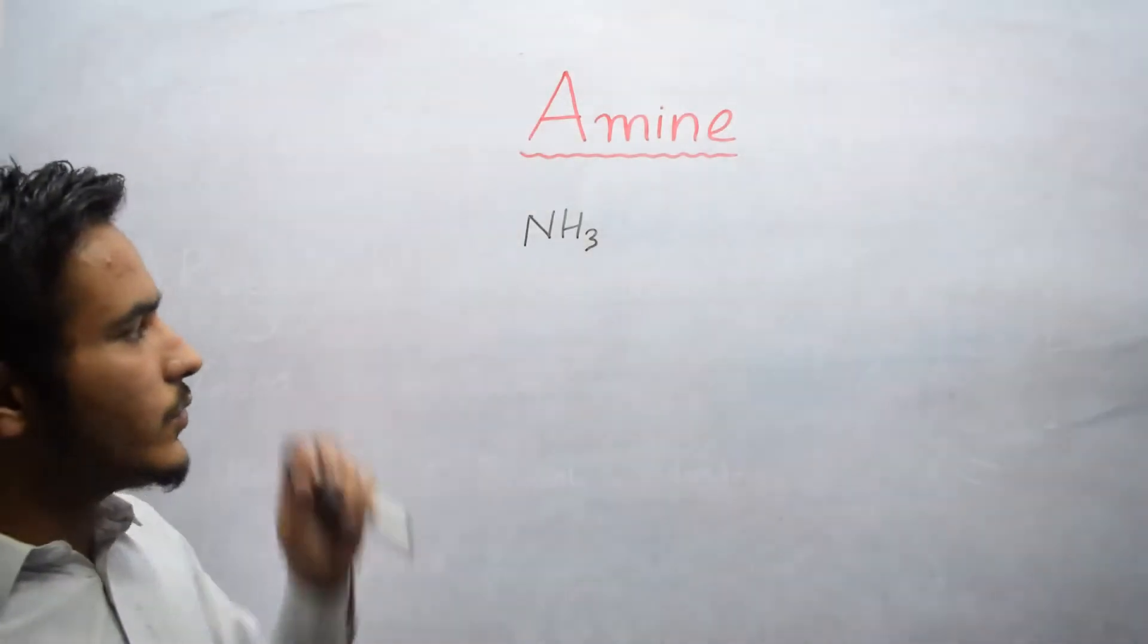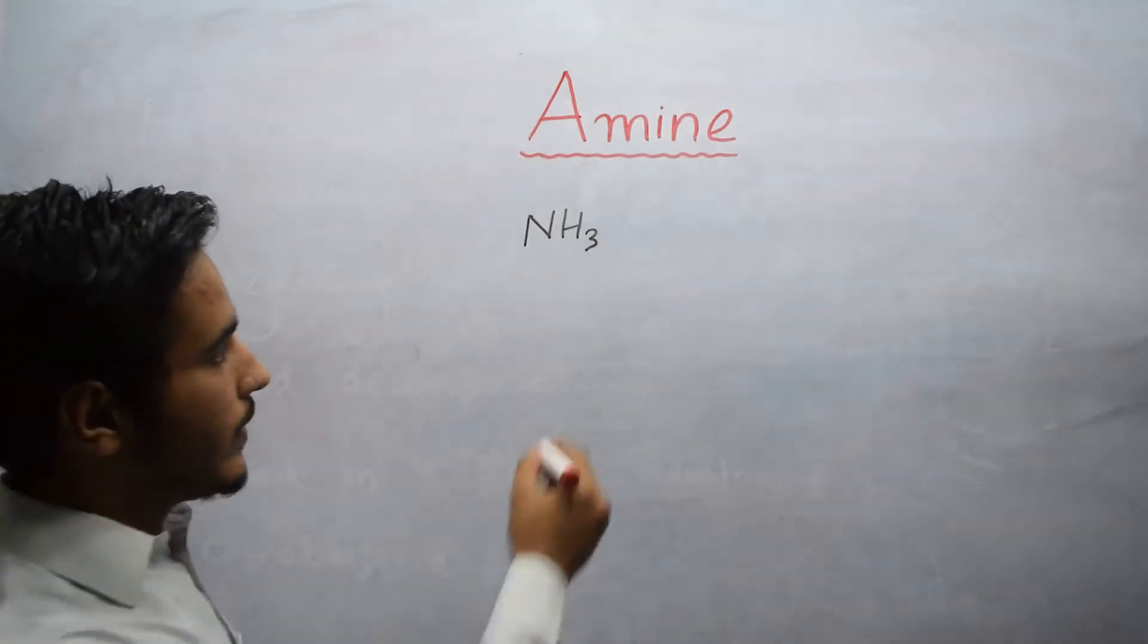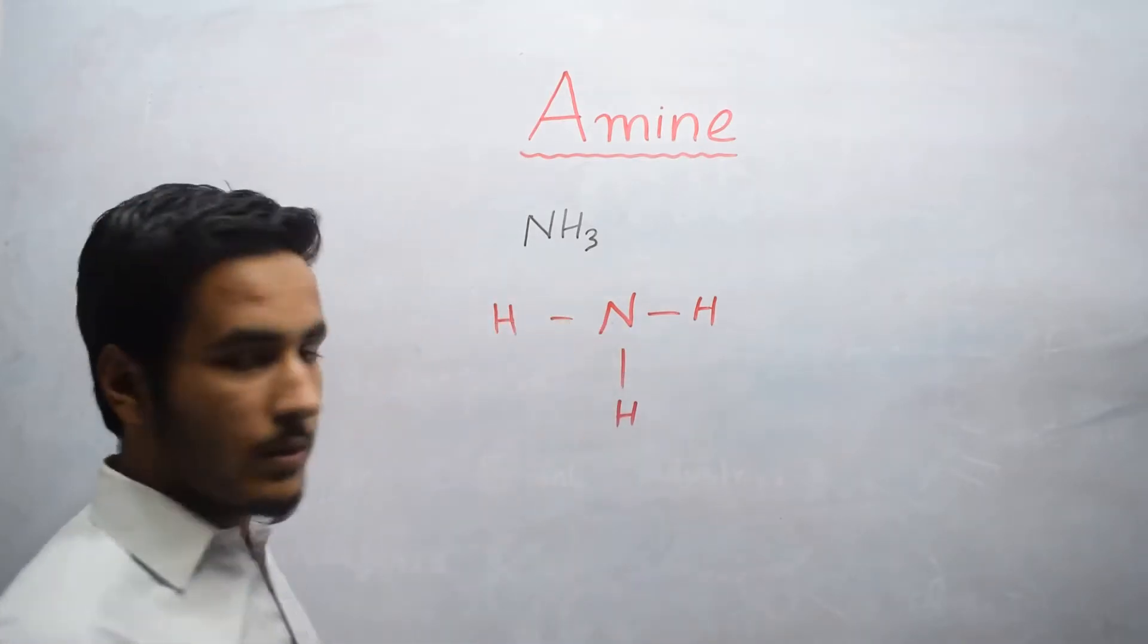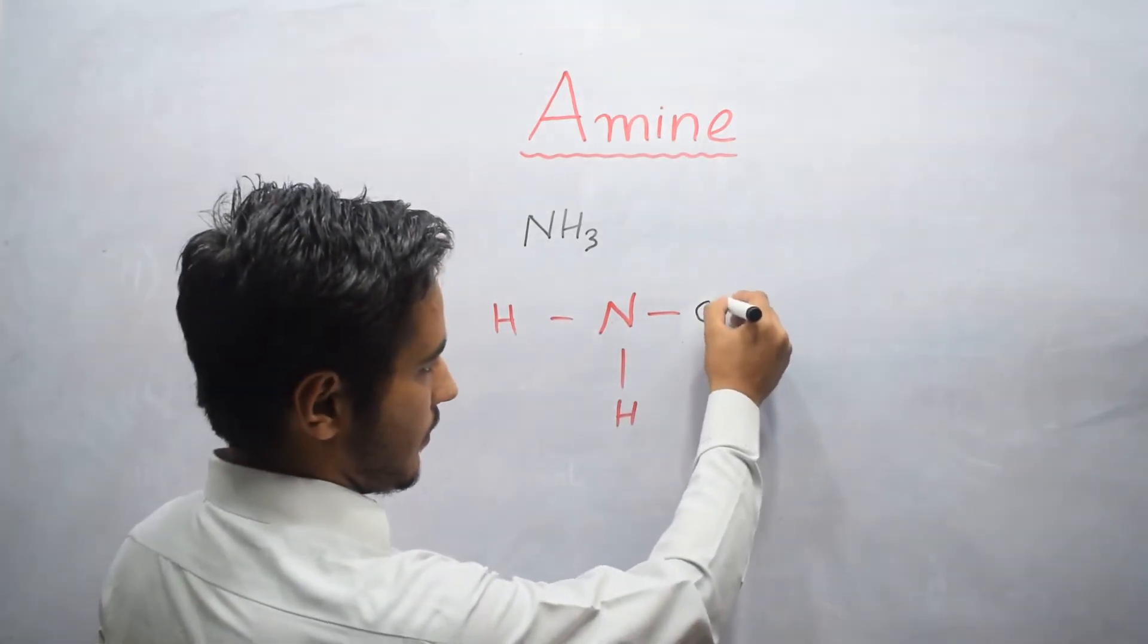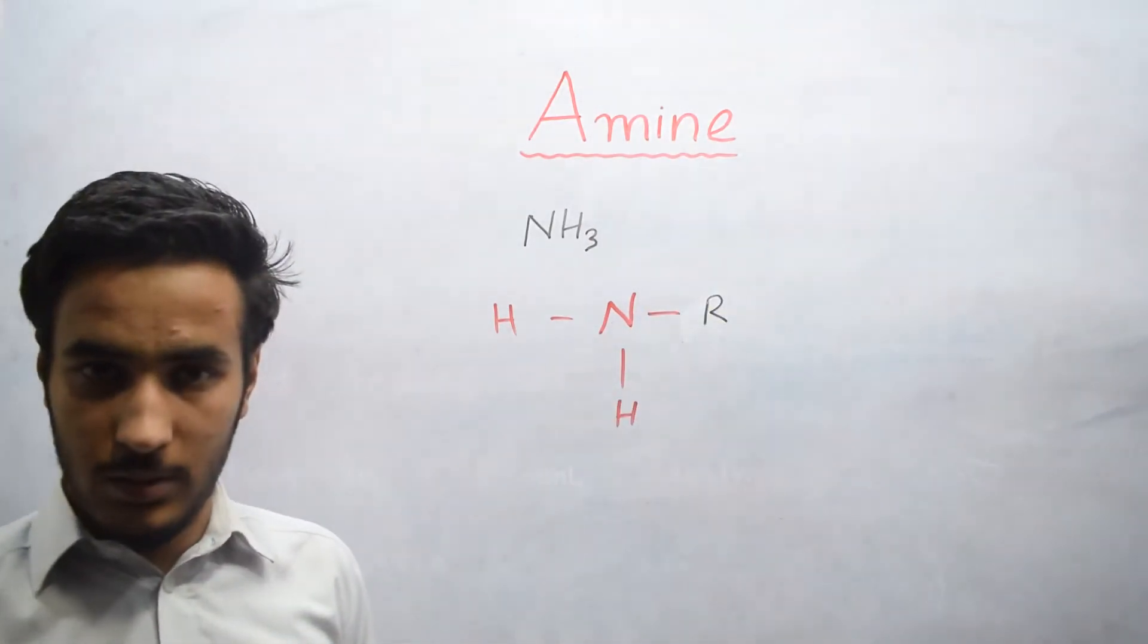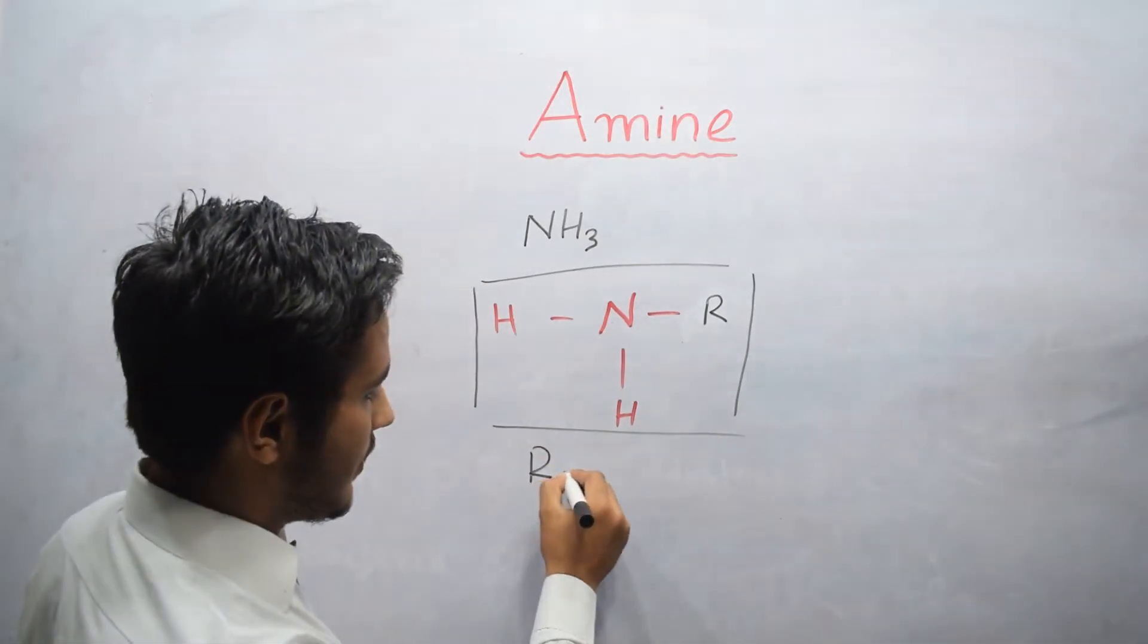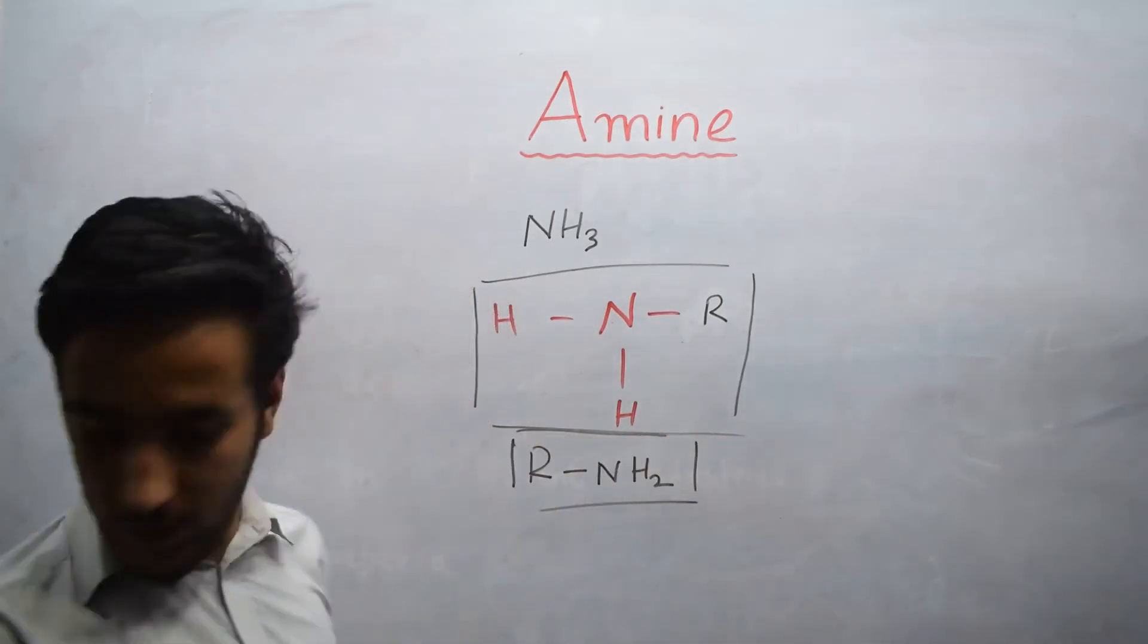For example, this is where we have the general formula of Ammonia. If we illustrate its structure, we will get like this. This is the main central atom Nitrogen and three Hydrogen. Now if you want to replace this Hydrogen by Alkyl group, CH3 or we can represent R will represent Alkyl group. So the next compound, this compound is now known as Amine. And the general formula is R bonded with NH2.